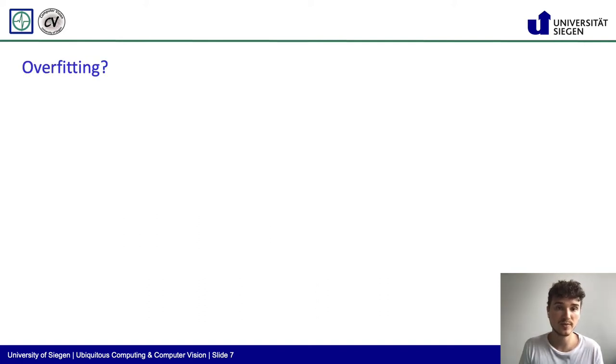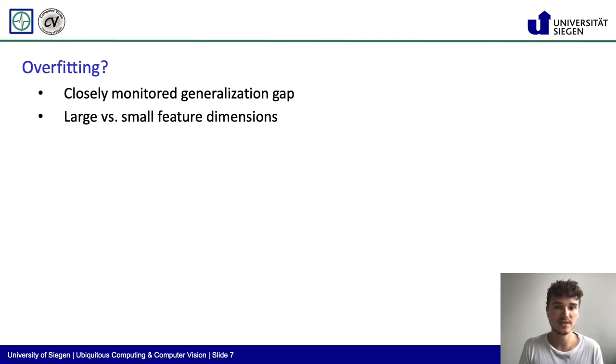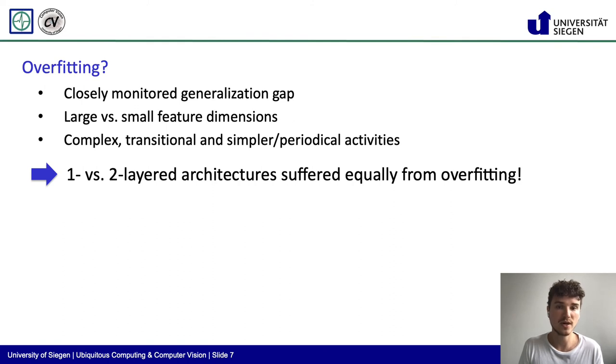Now, to conclude this presentation, let's talk about how we made sure to exclude overfitting as being the reason for the witnessed predictive performance increase. In order to spot the degree of overfitting, we closely monitored the generalization gap, which is the difference between training and validation accuracy. The larger the gap, the more likely the network overfitted on the training data. We also made sure to use datasets which have both large and small feature dimensions and varied the type of activities which are to be predicted by including complex, transitional and simpler periodical activities. All in all, we saw both architectures suffer equally from overfitting across all datasets.